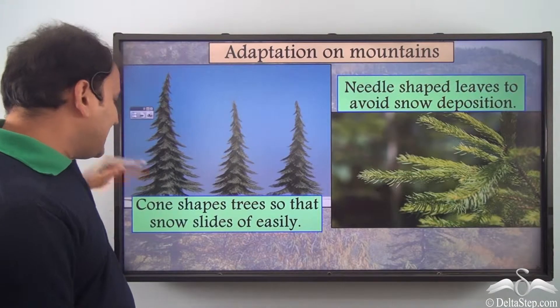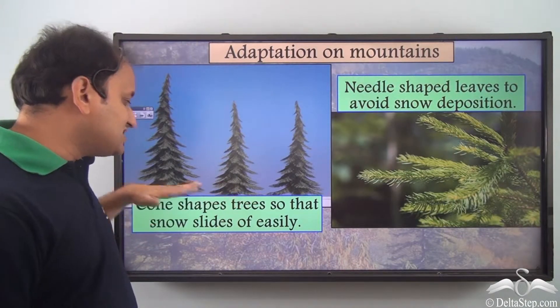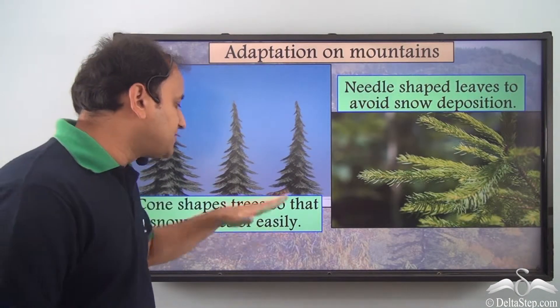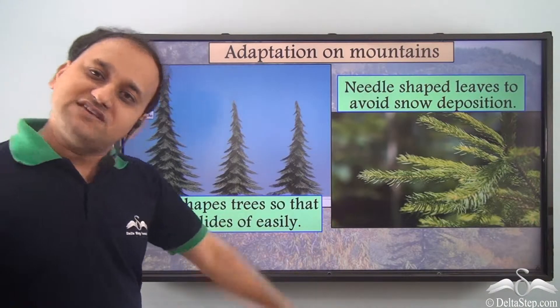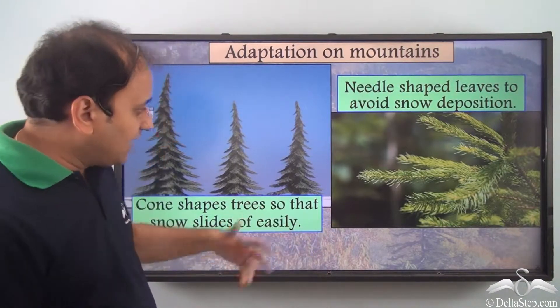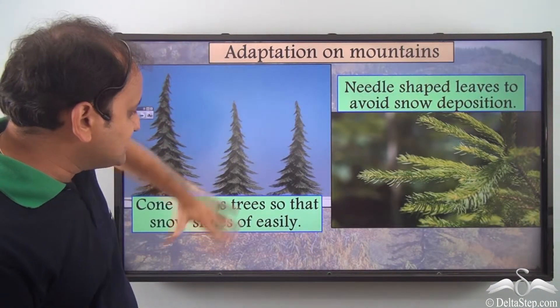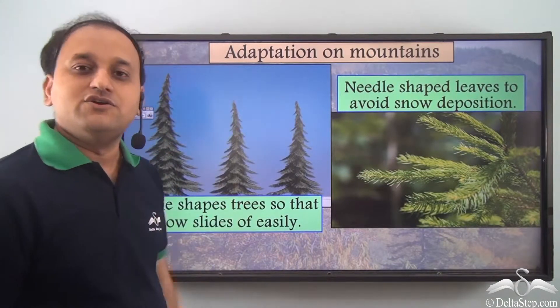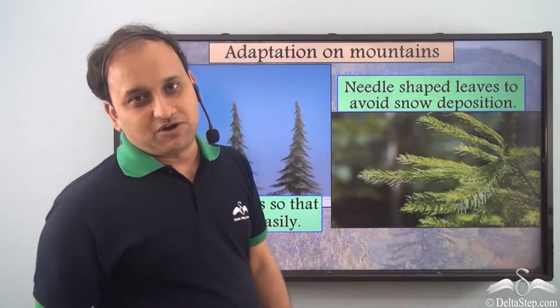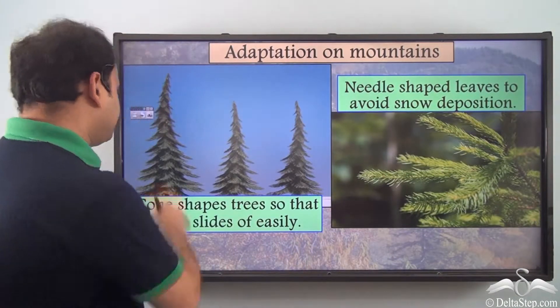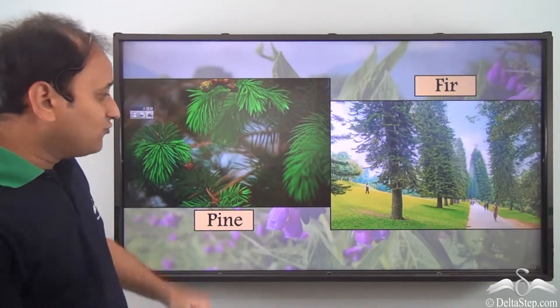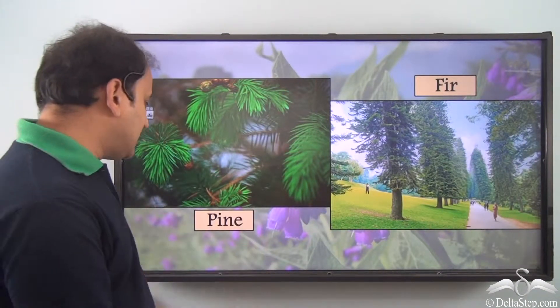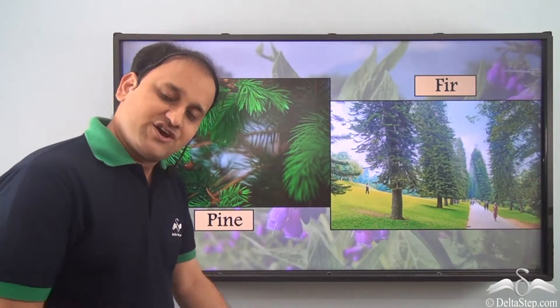Mountain plants are also cone-shaped — that is, the trees themselves are cone-shaped — so that snow slides off easily and does not deposit on the tree. Snow needs to easily slide off and not accumulate, so their cone shape serves that purpose. Common examples of plants that survive in mountainous regions are pine and fir.